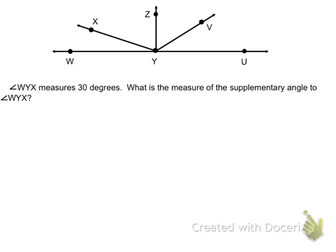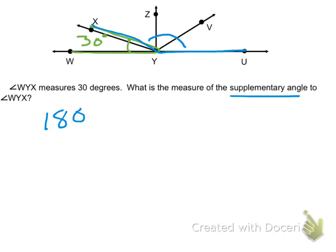Let's look at an example. Angle WYX measures 30 degrees. What is the measure of the Supplementary Angle to Angle WYX? The angle that makes it supplementary is going to be UYX. The measure of a Supplementary Angle adds up to 180 degrees, so I'm going to subtract 30 from it to find the missing angle. 180 minus 30 gives me 150 degrees.